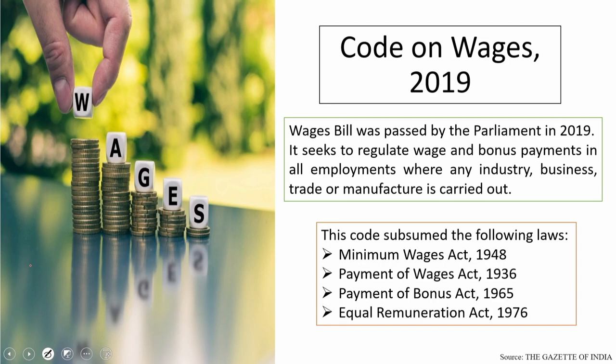If you look into the entire Labour Code specifically, we see that in India, Labour is a subject of the concurrent list. We have seen that in our previous lecture. Since it is in the concurrent list, both the Parliament and the state legislatures can enact laws on it.